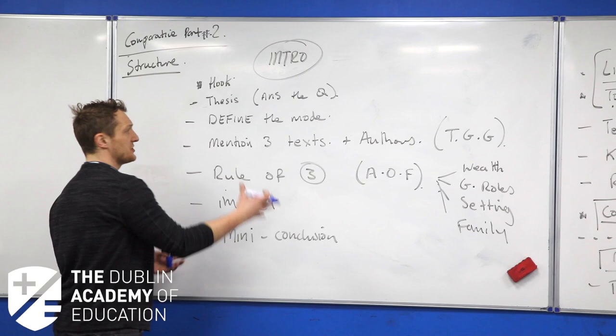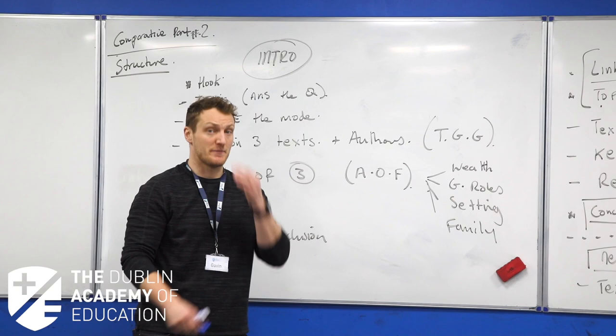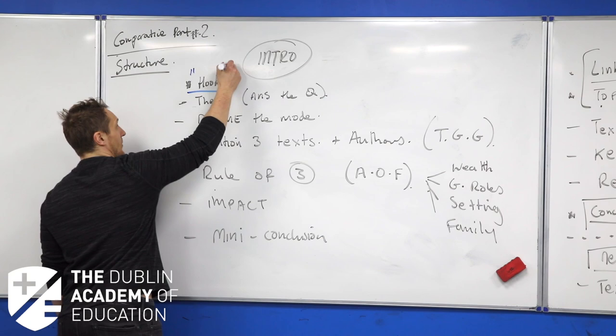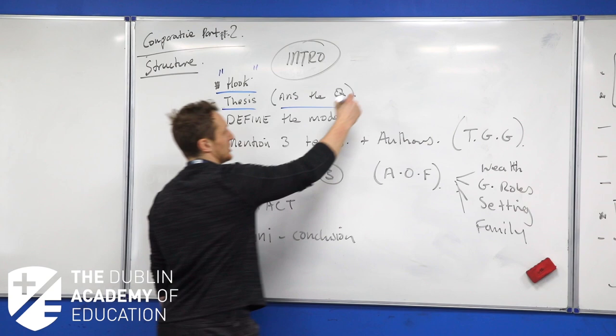Starting with our intro - as said in session two, it's about half an A4 page, probably three quarters of an A4 page considering the amount we need to get done. Within our introduction, we're going to include a hook, of which in today's session I will show you examples and exemplar material. We're going to include our thesis and answer our question.